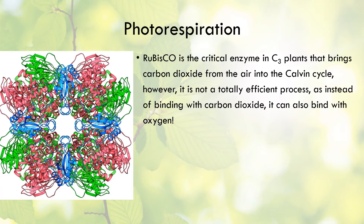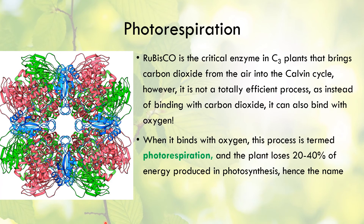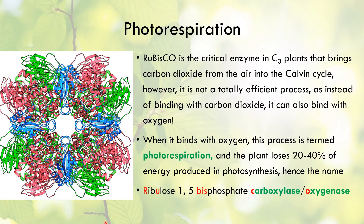The Rubisco enzyme - visible in the image with many beta-pleated sheets, alpha helices, and random coils, along with green, red, and blue subunits - is used by C3 plants to fix carbon dioxide from the air into the Calvin cycle. However, instead of binding with carbon dioxide, Rubisco can also bind with oxygen, which is termed photorespiration. When this occurs, the plant loses 20 to 40 percent of the energy produced in photosynthesis.